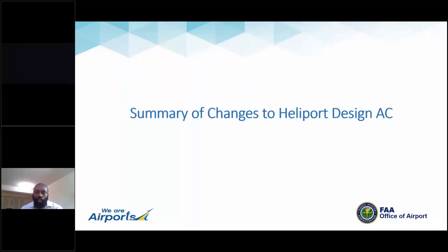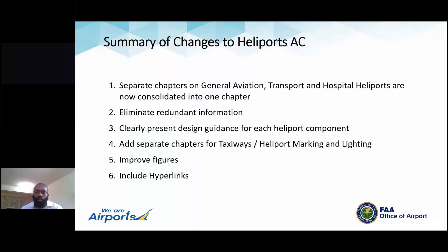Just to provide a quick summary of some of the changes — mostly editorial. We're taking those separate chapters on GA, transport, and hospital to consolidate into one chapter, dealing with a lot of the redundancies and repetition that existed in the previous AC revision, and separating out chapters for taxiways and visual aids. We're also improving the figures, which were not clear and in some cases did not match the text. We're addressing those inconsistencies and providing hyperlinks as well.